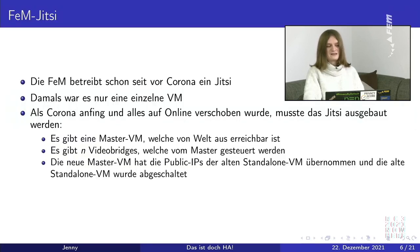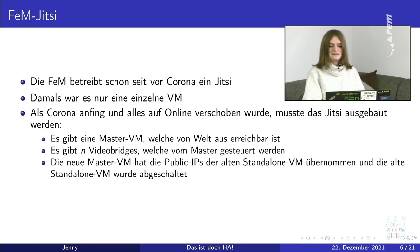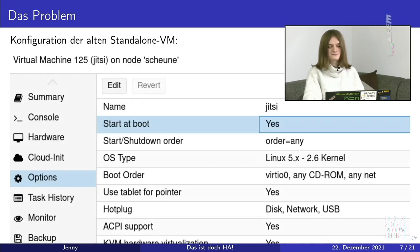Let's start with something which I don't have as much exposure to. The FEM operates a Jitsi instance. In the past, this only had been one VM. But since Corona started and everything went online, the demand was to have a Jitsi — it had to be expanded. There has been a Master VM which was globally reachable, and several video bridges controlled by the Master. The Master VM had public IPs — IPv4, IPv6 — from a standalone VM. And then that standalone VM was turned off.